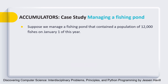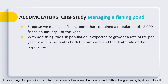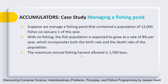In this case study, we have to manage a fish pond population. It is given that the initial population is 12,000 at the beginning of the year. With no fishing, the fish population is expected to grow at a rate of 8% per year, which incorporates both birth rate and death rate of the population.